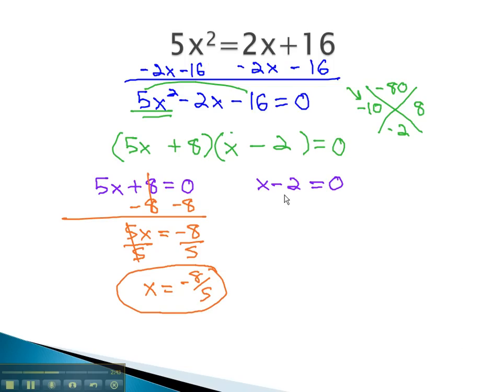We do have a second solution, which comes from the second factor. Adding 2 to both sides gives us x equals 2. When x equals 2, the original equation would also be a true equation.